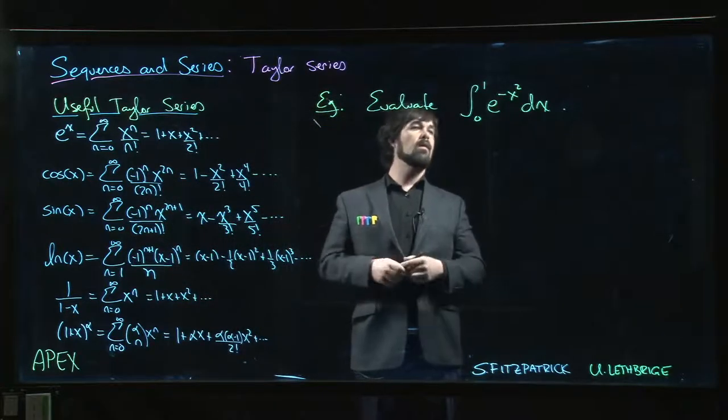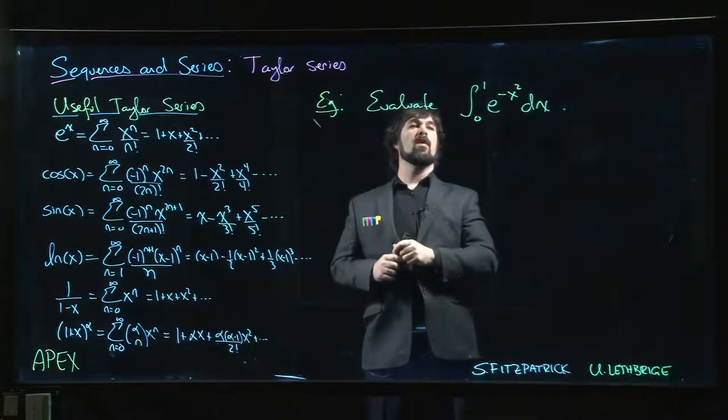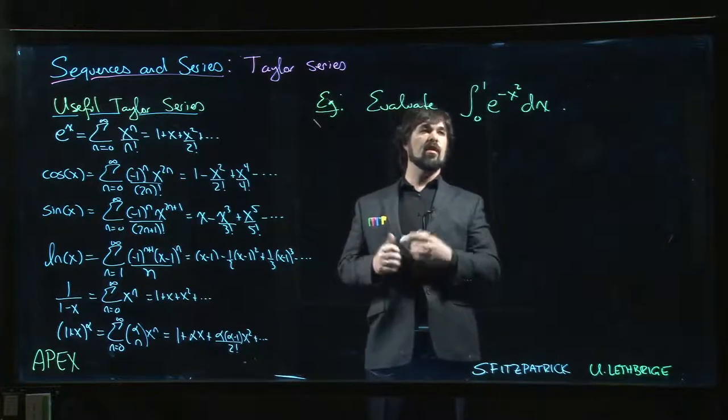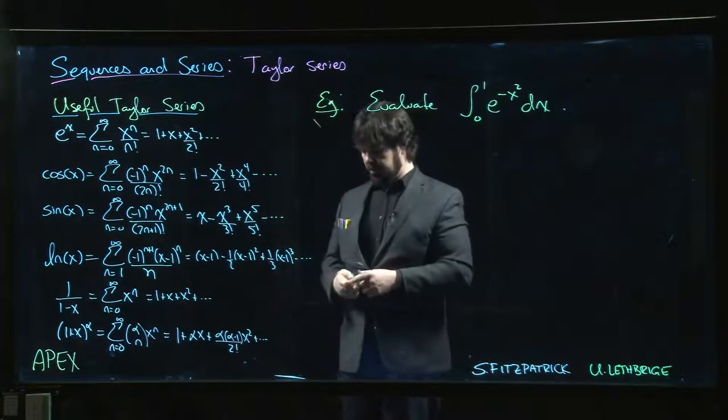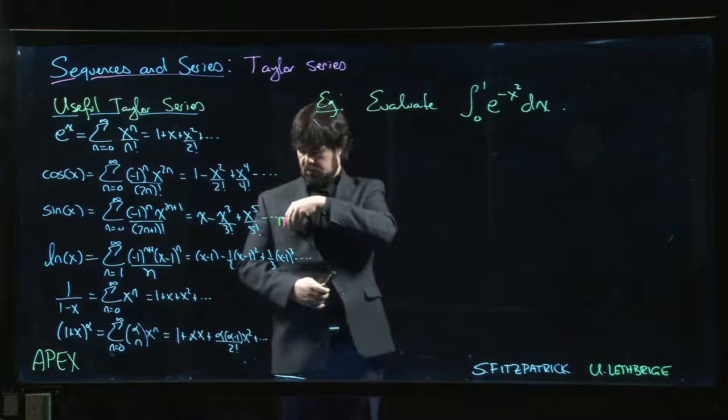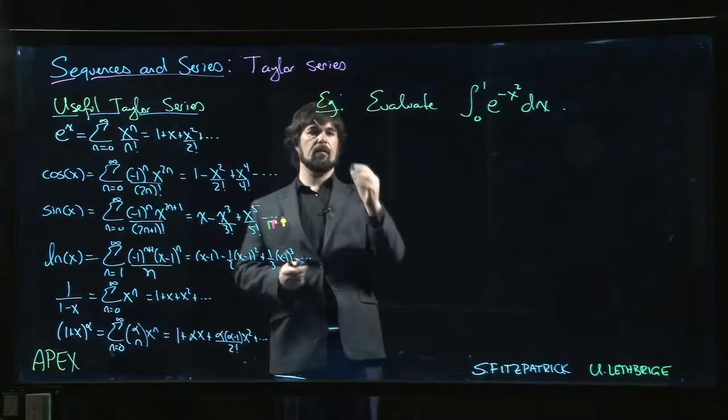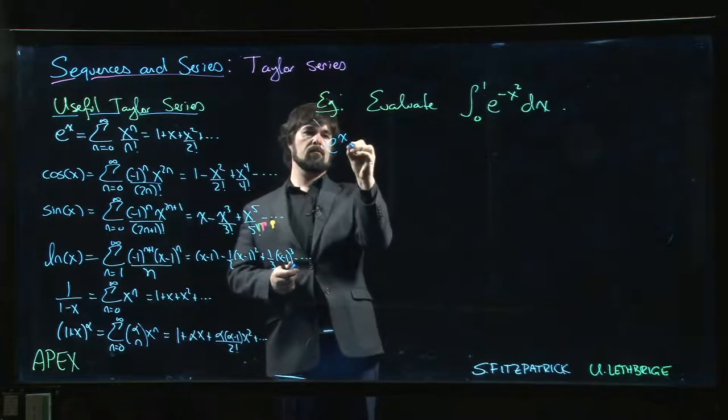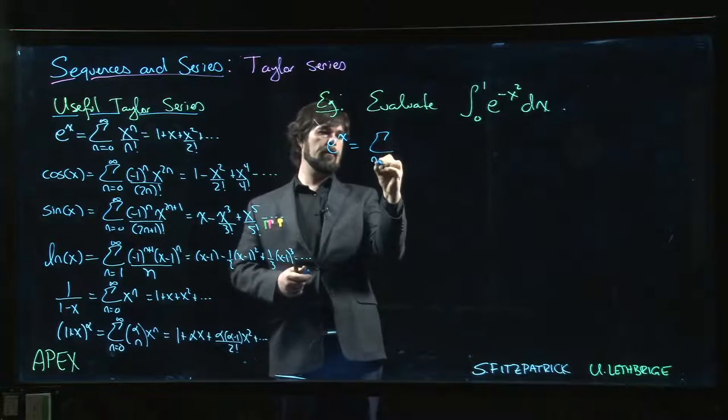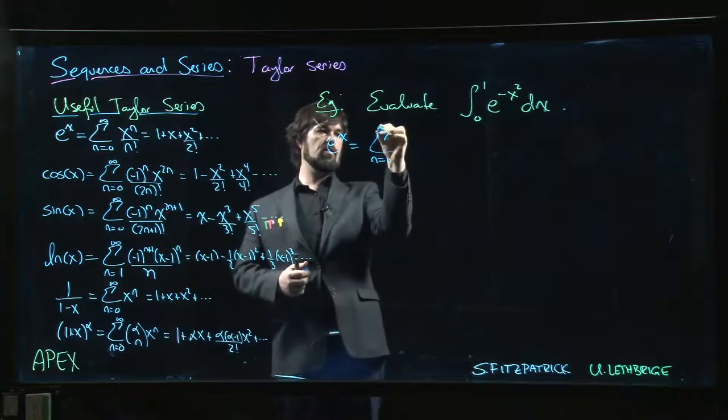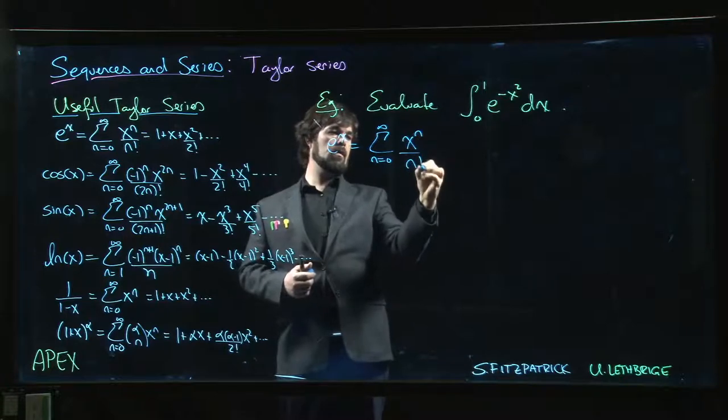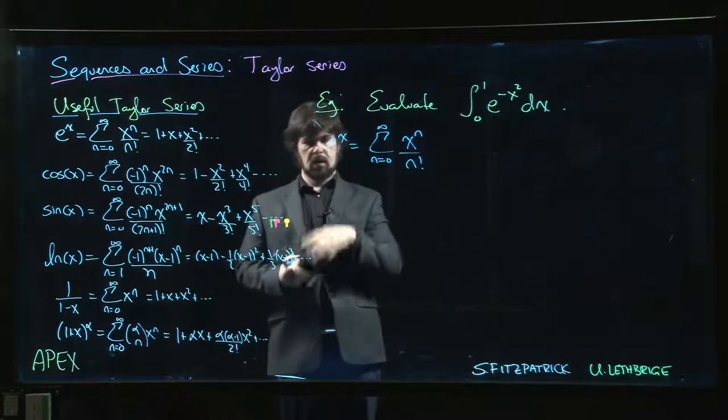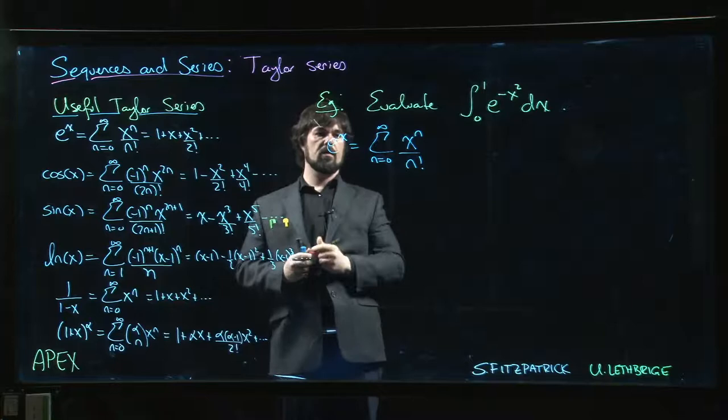Well, we can find a Taylor series for this thing. If we can get a Taylor series for it, we know that we can integrate term by term. So here's e to the x. We have e to the x is the sum from n going from 0 to infinity of x to the n over n factorial.